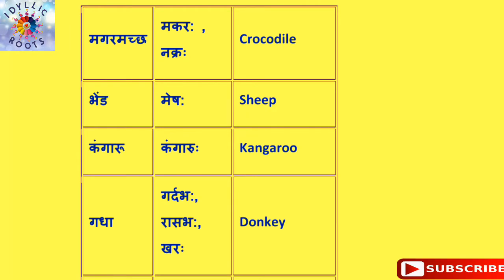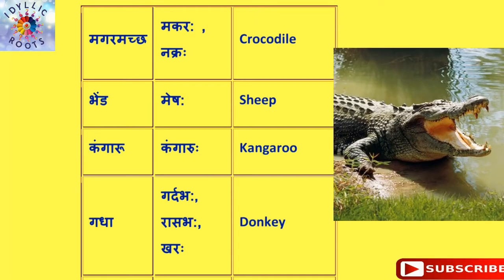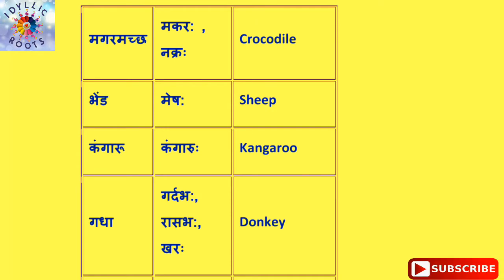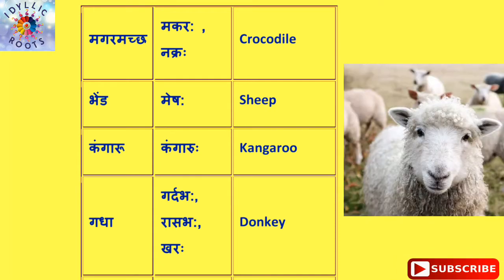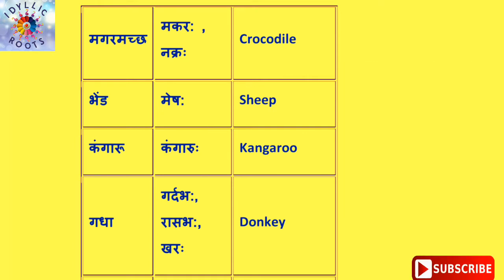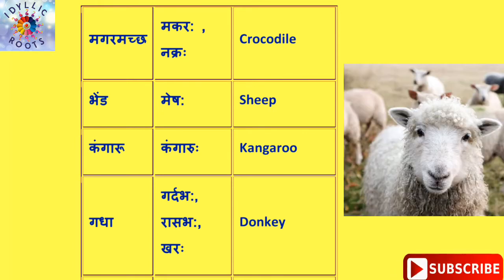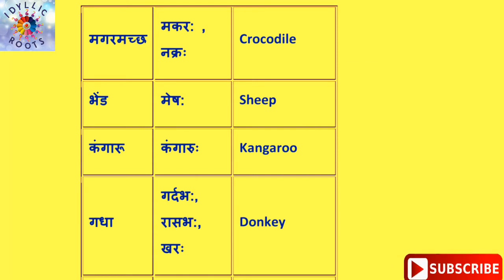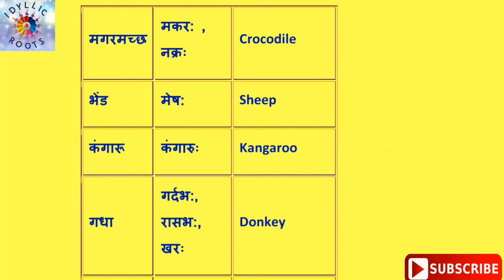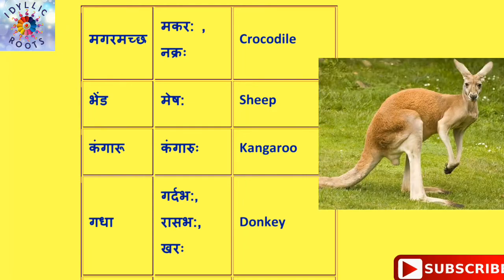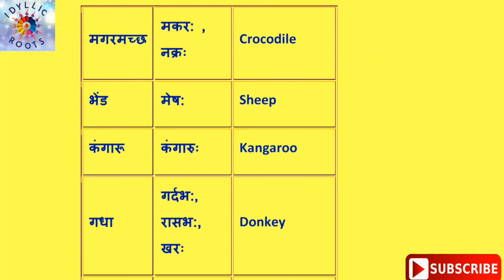मगरमच्छ को English में कहते हैं Crocodile और संस्कृत में कहते हैं मकरः। भेड़ को English में कहते हैं Sheep और संस्कृत में कहते हैं मेषः। कंगारू को English में कहते हैं Kangaroo और संस्कृत में भी कहते हैं Kangaroo।